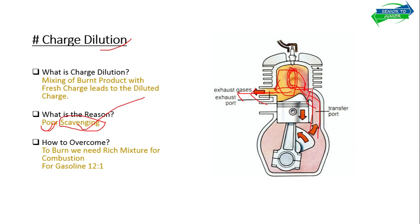Due to poor scavenging, the fresh charge does not force the burnt charge out of the cylinder, so it accumulates. After some time, your exhaust charge and fresh charge are both accumulated in the cylinder. This makes it very difficult for the spark plug, in the case of a petrol engine, to burn the mixture. To burn it, you need to supply a rich mixture — more fuel to this zone of air, fuel, and exhaust gases. The mixture ratio for a petrol engine would be around 12 to 1.